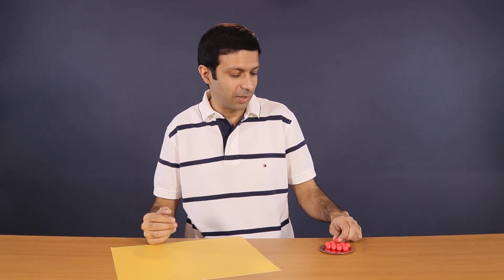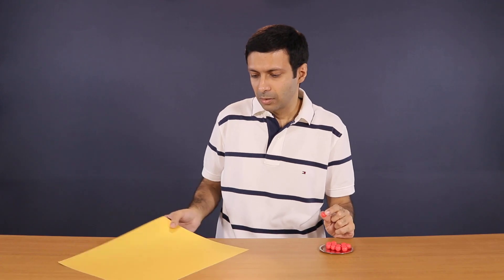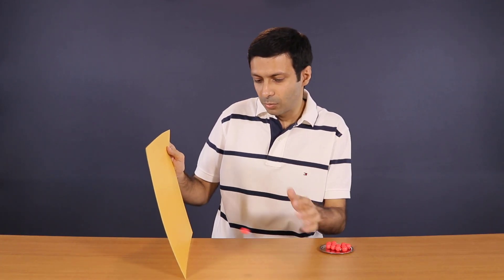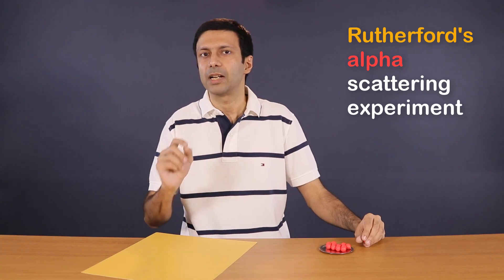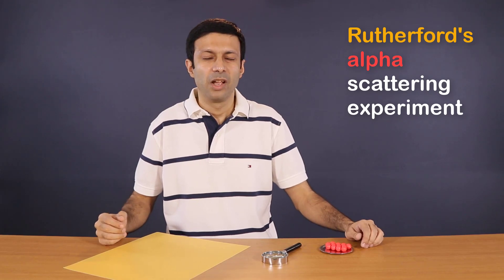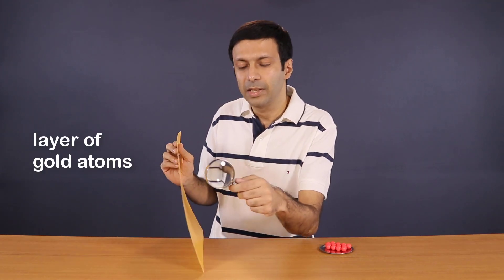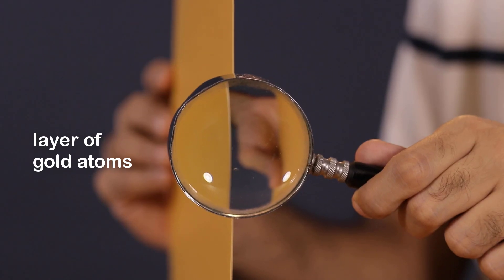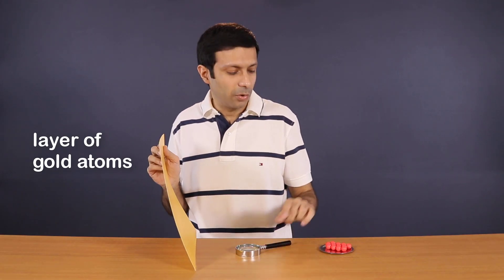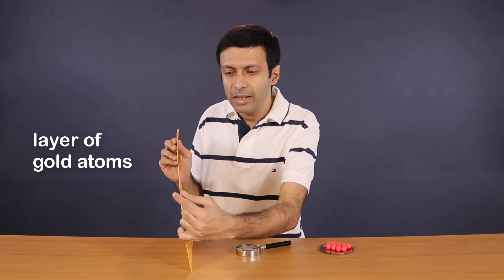Now I have these tiny red balls here, which represent the alpha particles. So what did they do? They took the gold foil and bombarded it with these alpha particles. And they observed the scattering of the alpha particles by the gold foil. So that's why this is famously known as the alpha scattering experiment. Let's try to recreate Rutherford's experiment. For that I need your help. So let's imagine we are going to magnify this thin layer of gold atoms here. And then we are going to study the scattering of these alpha particles by this thin layer of atoms right here.